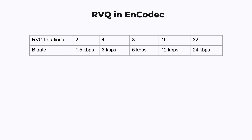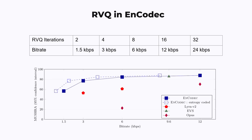In the Encodec model, the number of iterations we apply residual vector quantization determines the bit rate. The number of iterations can be anywhere from 2, 4, 8, 16, or 32, which means the bit rate can be 1.5, 3, 6, 12, or 24 kbps. And this chart from the paper shows how the bit rate affects the quality score. It seems that once you get below 6 kbps, the quality score starts to degrade significantly.